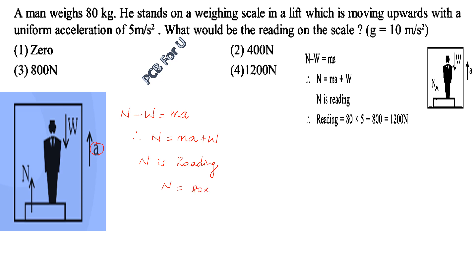Since N is the reading of the weighing machine, N is equal to the mass of the man multiplied by the acceleration. Since m is equal to 80, acceleration is equal to 5. N plus W is equal to mass of the man into the acceleration. Given g is equal to 10 m/s².